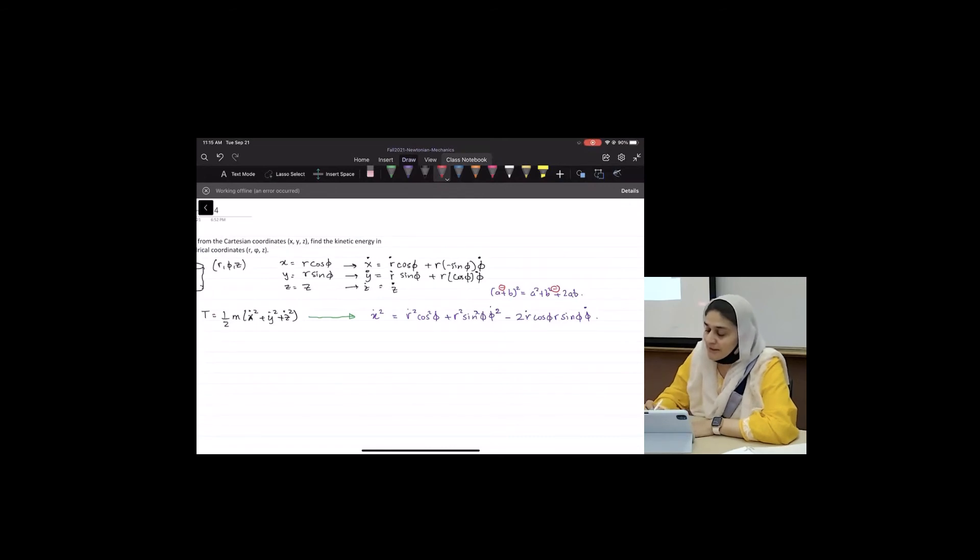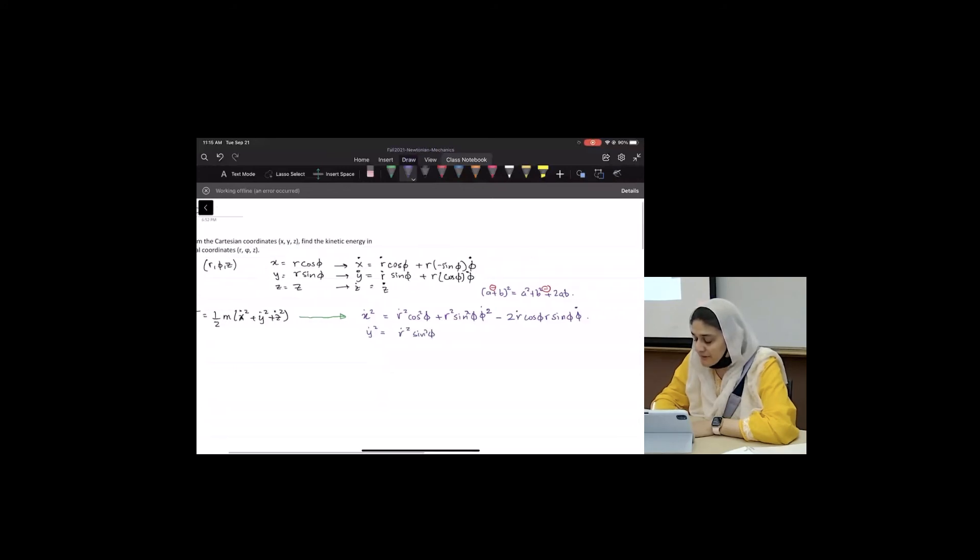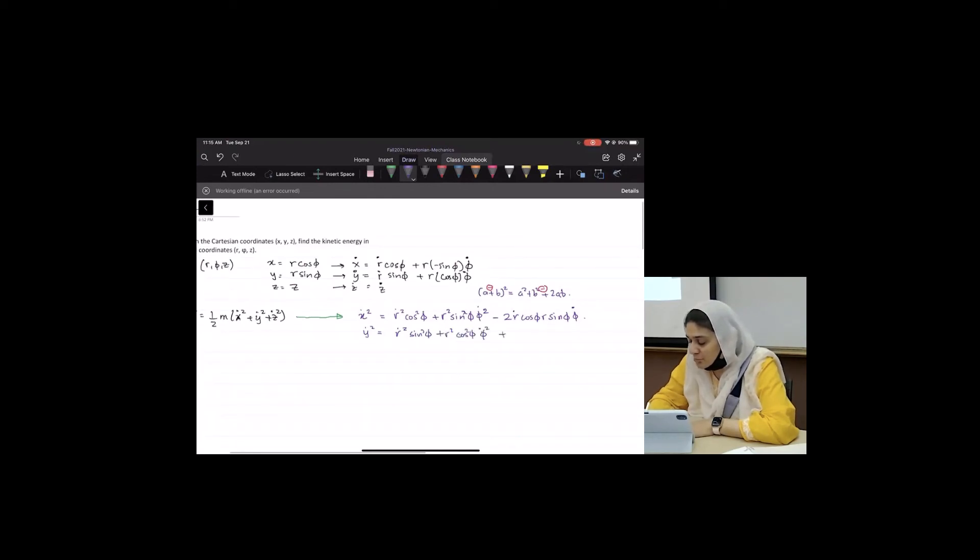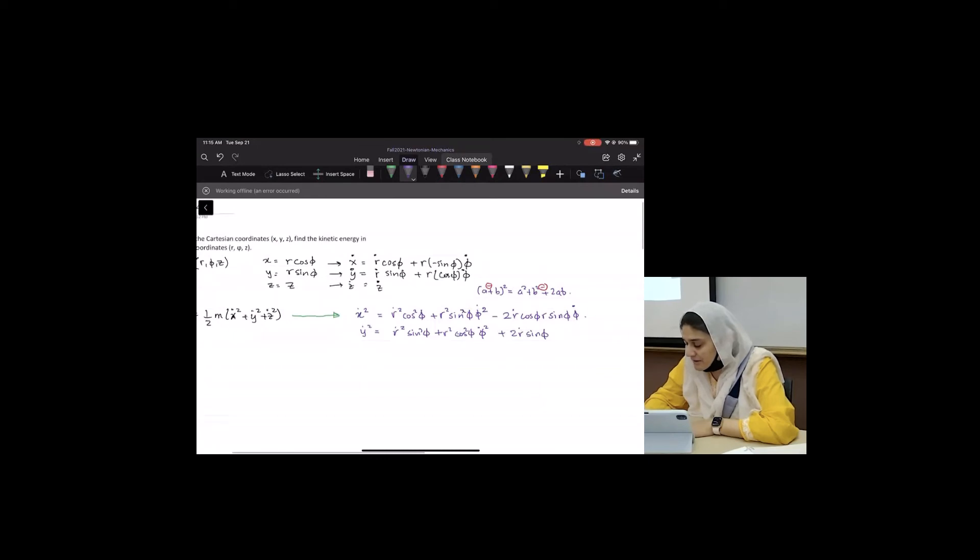And then I will do Y dot squared. R dot squared sine squared phi plus R squared cosine squared phi phi dot squared plus 2R dot sine phi R cosine phi phi dot, and Z dot squared equals Z dot squared. That doesn't change.